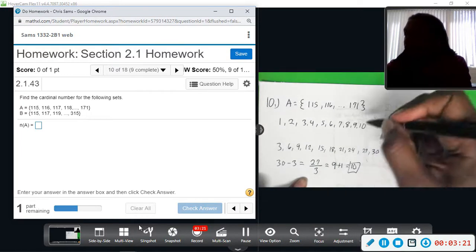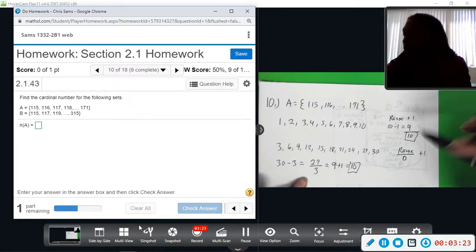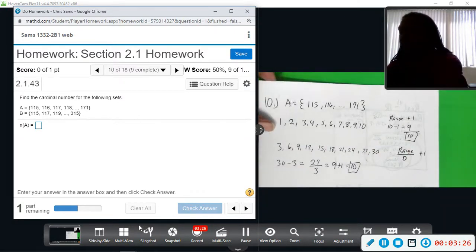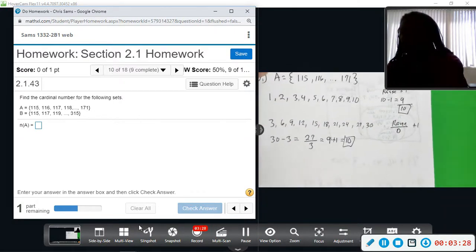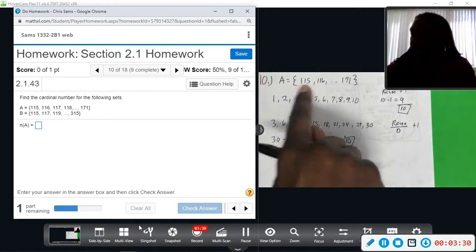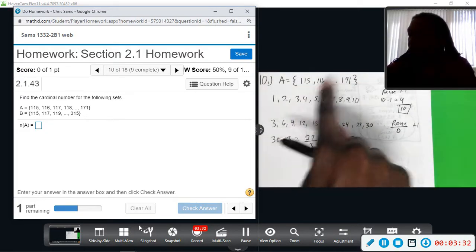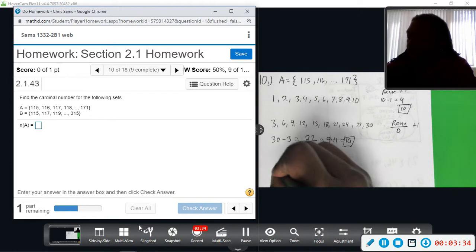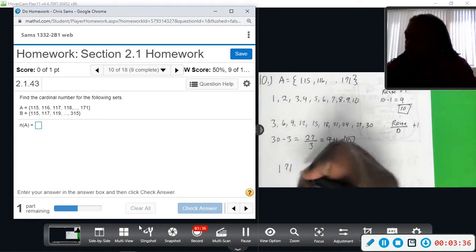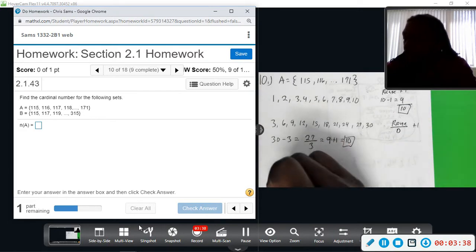So this is what you will use to count these sets and find the cardinal number. So I'm going to use the same thing. These are counted by 1s: 115, 116. So I'm going to do 171 minus 115.